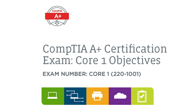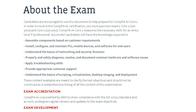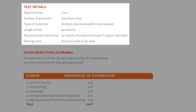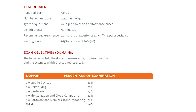This is the Core 1 220-1001, downloaded from the CompTIA website. You're going to have a maximum of 90 questions, both multiple-choice and performance-based questions. The length of test is 90 minutes, and they recommend 12 months of experience. The passing score is 675 on a scale of 100 to 900.